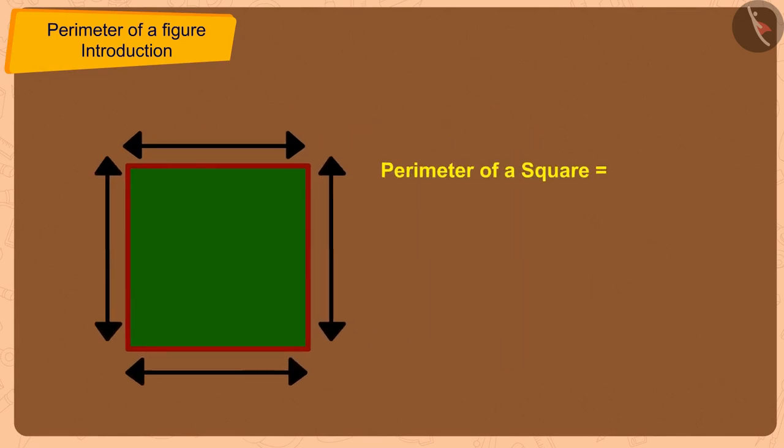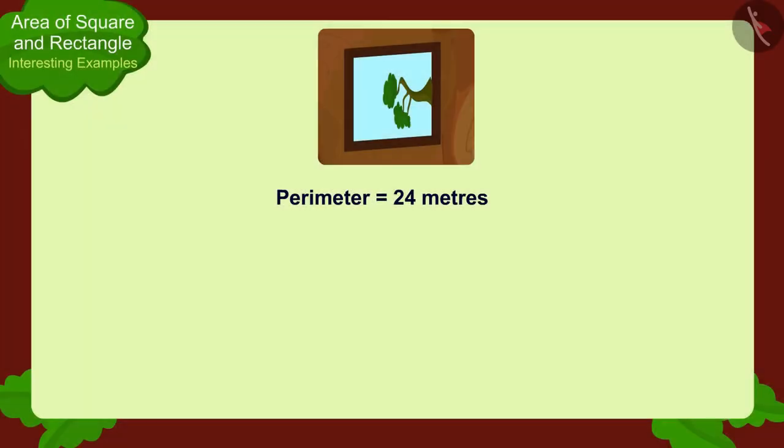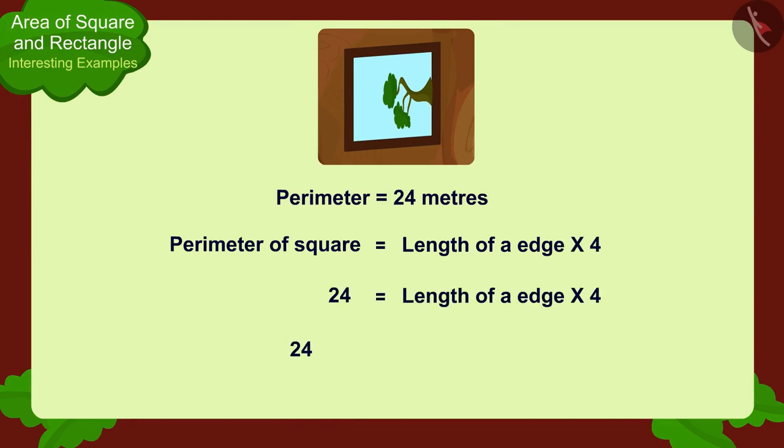Therefore, the perimeter of a square shaped window will be four times the length of any of its edges. In this way, we can find the length of any of the edges of the window as six meters. We can find the area of the square window by multiplying its length and width.